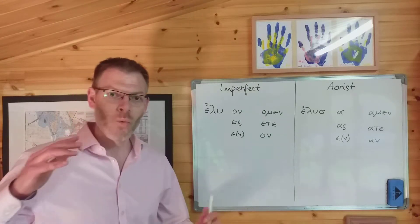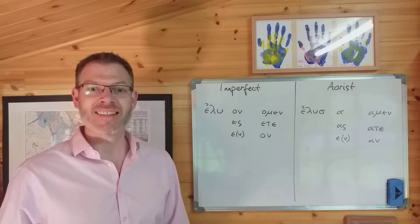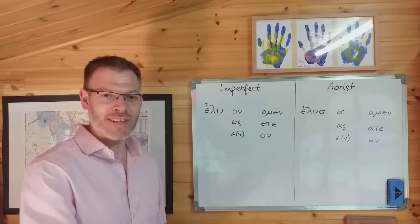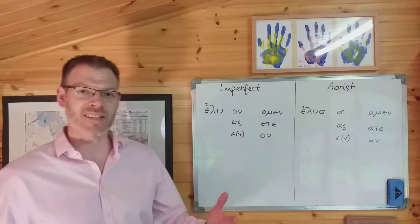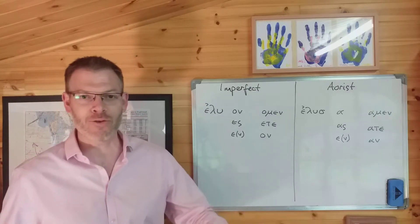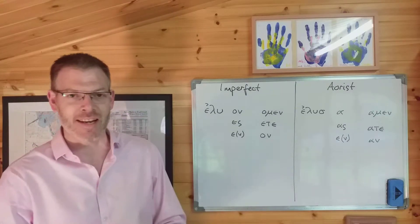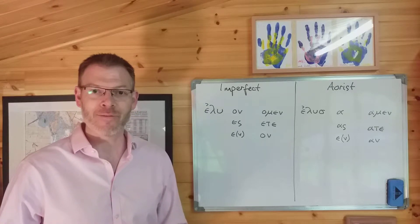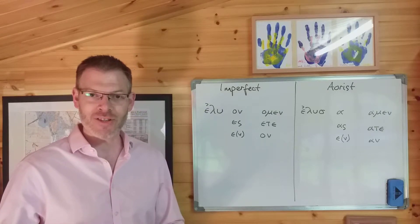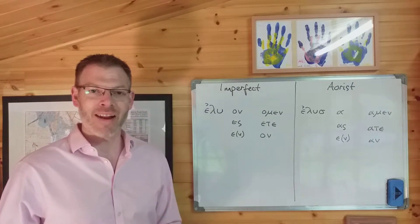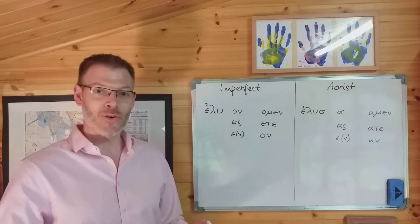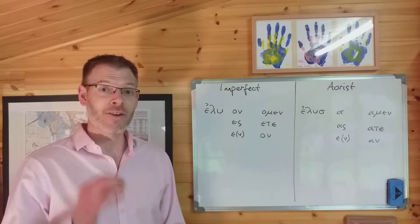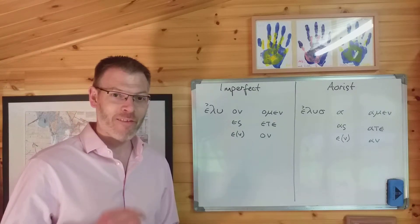We have started to introduce the additional three tenses that you haven't looked at previously. We'd previously had the present tense; now you've got the future tense, and the imperfect tense, and the aorist tense. You know how to distinguish them, first and foremost, by the fact that they have an epsilon augment and/or a sigma suffix, whereas the present doesn't have either. You should by now have learned that.